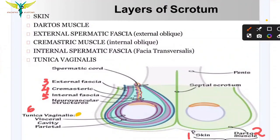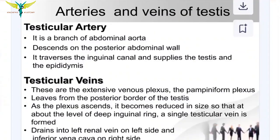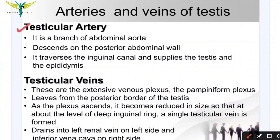Within the tunica vaginalis layer there is a visceral layer and also a parietal layer, with a cavity in between. The accumulation of serous fluid between these two layers — the visceral and the parietal layer of the tunica vaginalis — is nothing but the hydrocele.